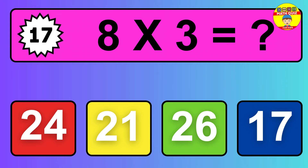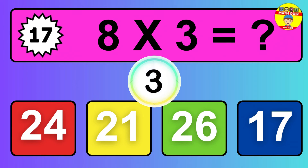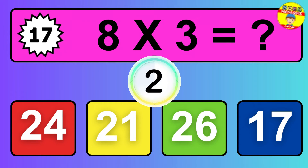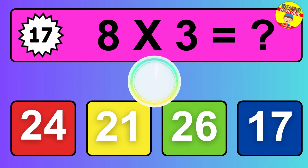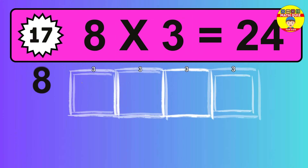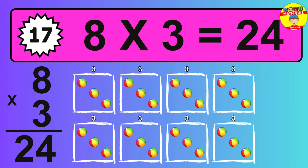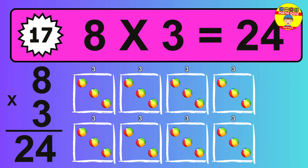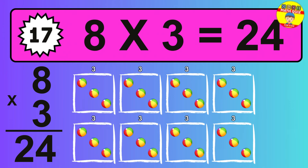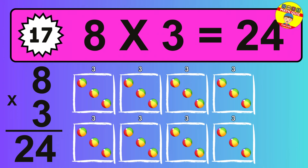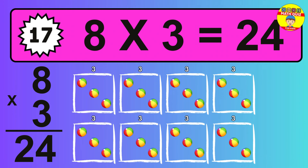Question 17. 8 times 3 equals what? The answer is 8 times 3 is 24. To calculate, we have 8 groups with 3 balls each one. So, how many balls do we have? 24 balls.